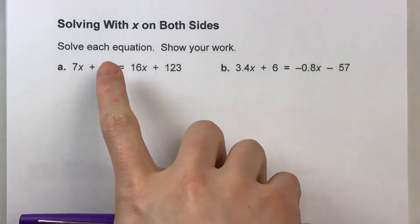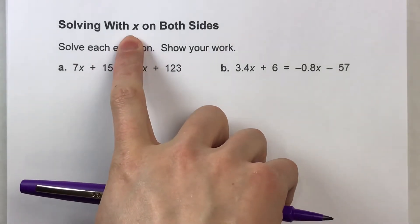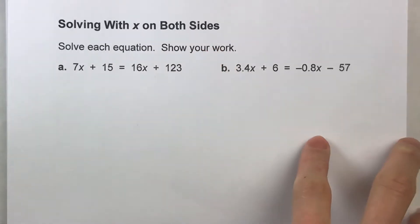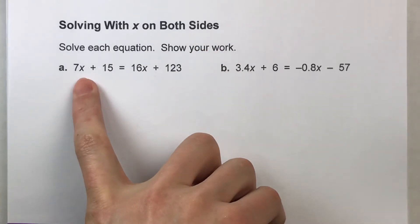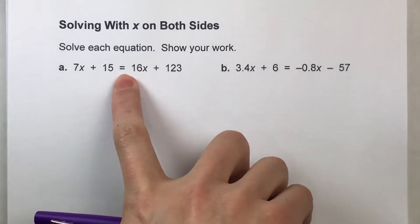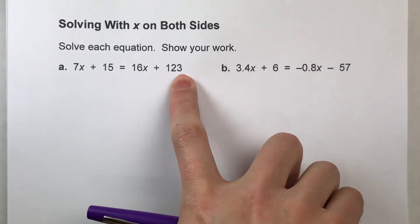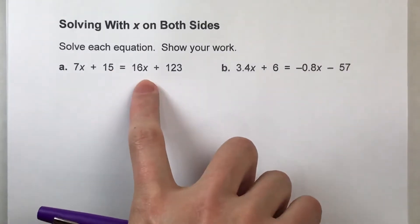Alright, so today we are solving algebra equations where x is on both sides of the equal sign. For example, we've got 7x + 15 = 16x + 123, so we've got x's on both sides of the equal sign here.